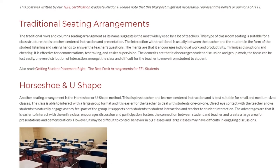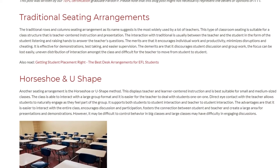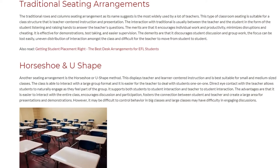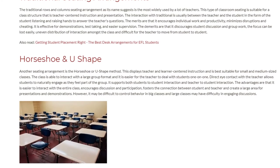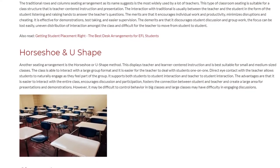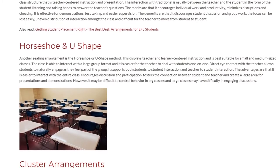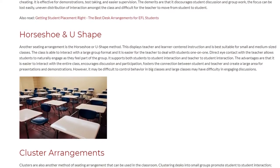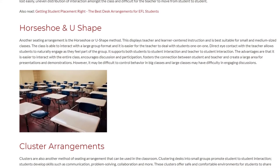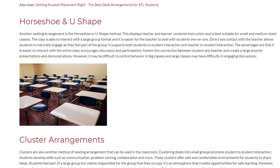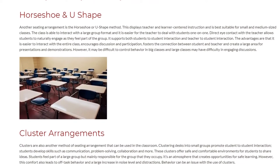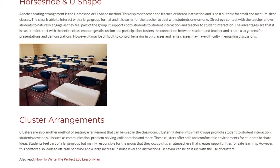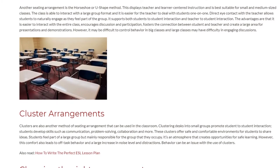Another seating arrangement is the horseshoe or U-shape method. This displays both teacher-centered and learner-centered instruction and is best suitable for small and medium-sized classes. The class is able to interact in a large group format, and it is easier for the teacher to deal with students one-on-one. Direct eye contact with the teacher allows students to naturally engage as they feel part of the group. It supports both student-to-student and teacher-to-student interaction. The advantages include easier interaction with the entire class, encouragement of discussion and participation, stronger connection between student and teacher, and a large area for presentations. However, it may be difficult to control behavior in big classes, and large classes may have difficulty engaging in discussions.